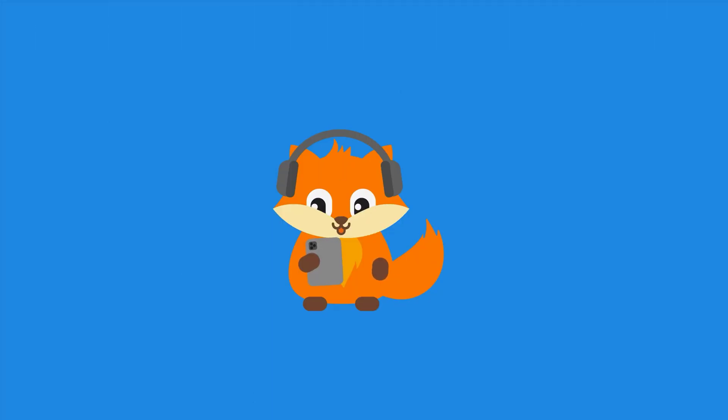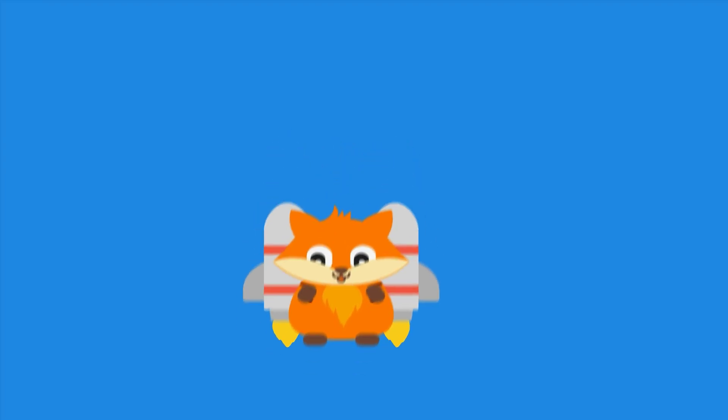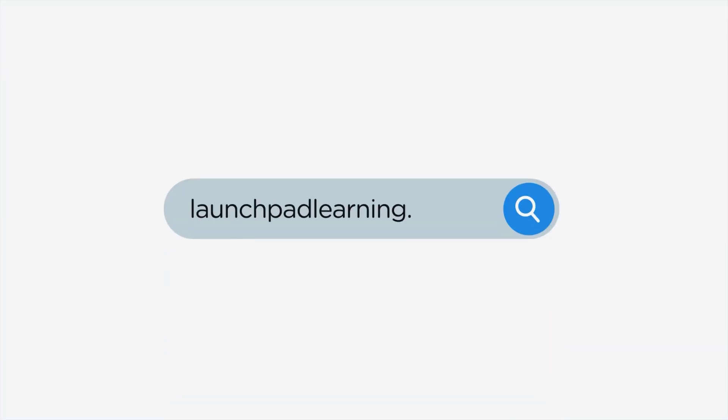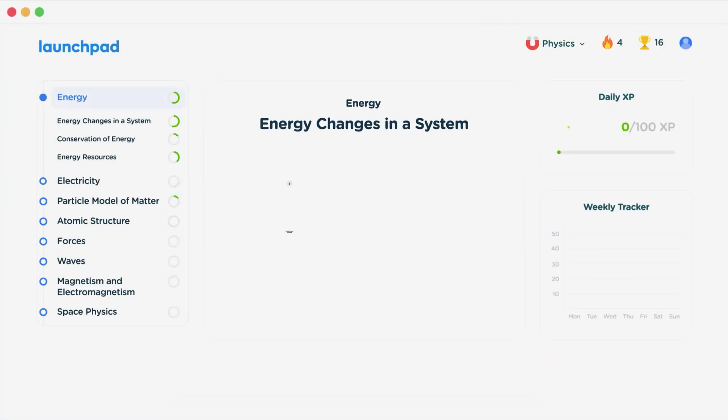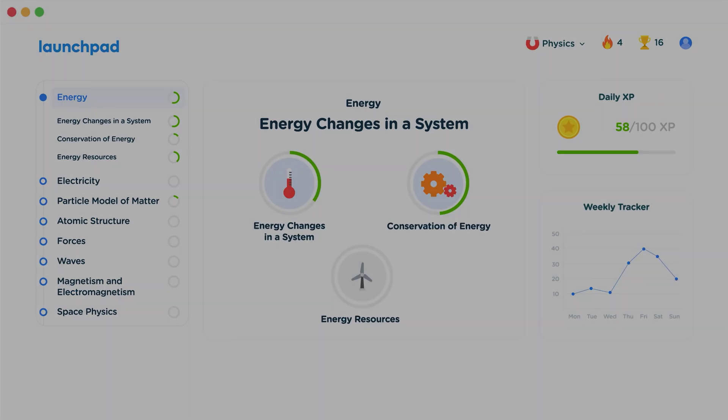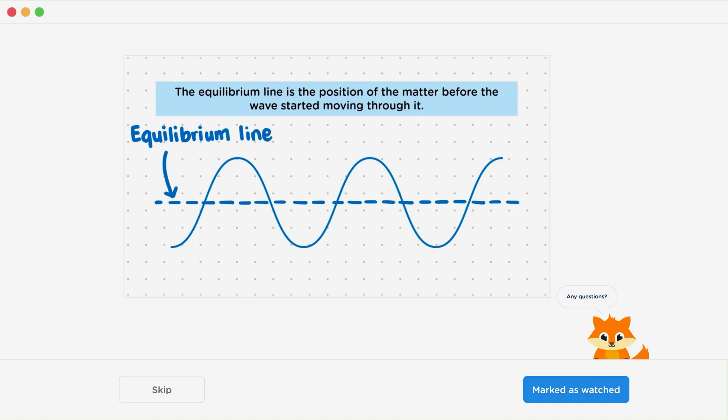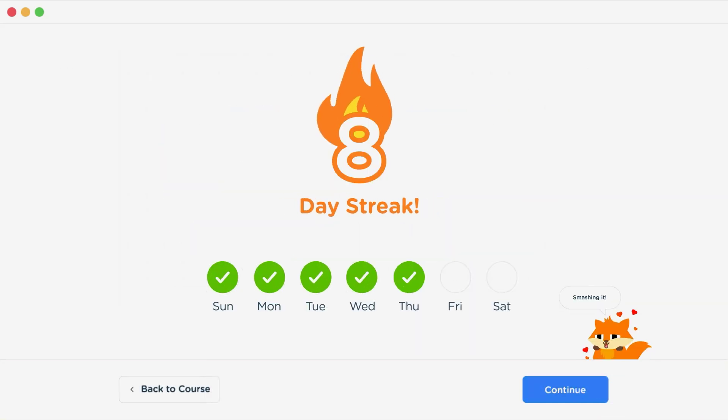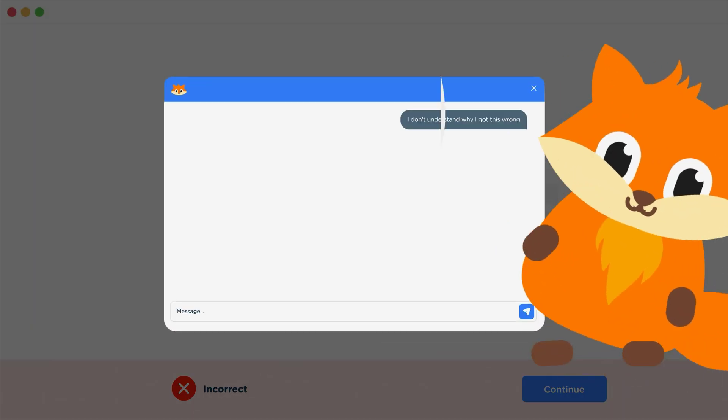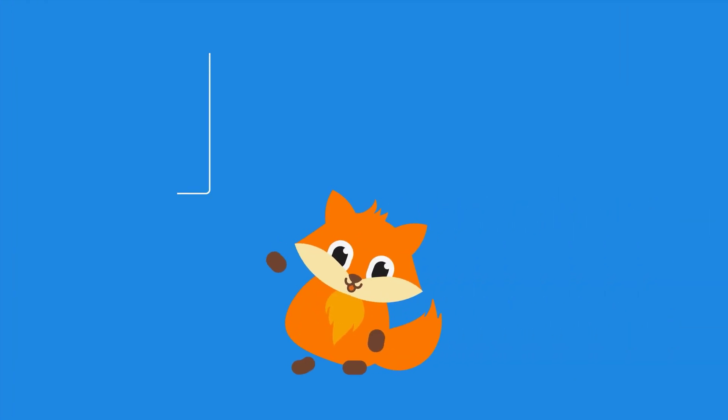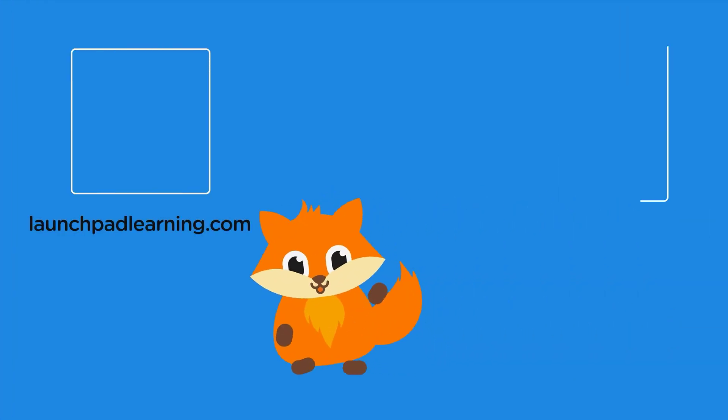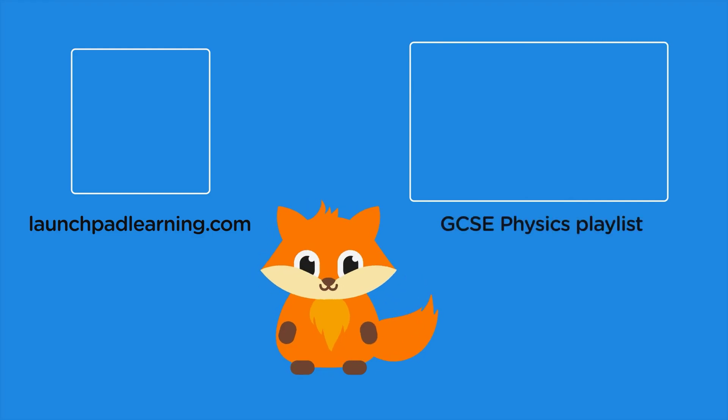If you want to take your GCSE revision to the next level, head over to launchpadlearning.com and check out our smart learning platform that's been designed to get you top results in your exams. We cover your whole specification and make revision fun with interactive quizzes, easy-to-follow videos, and more. You'll be kept motivated by your own AI tutor who's here to support you every step of the way. To check it out for yourself, click here. Or click here to keep watching a selection of the videos from our full GCSE Physics course. See you there!